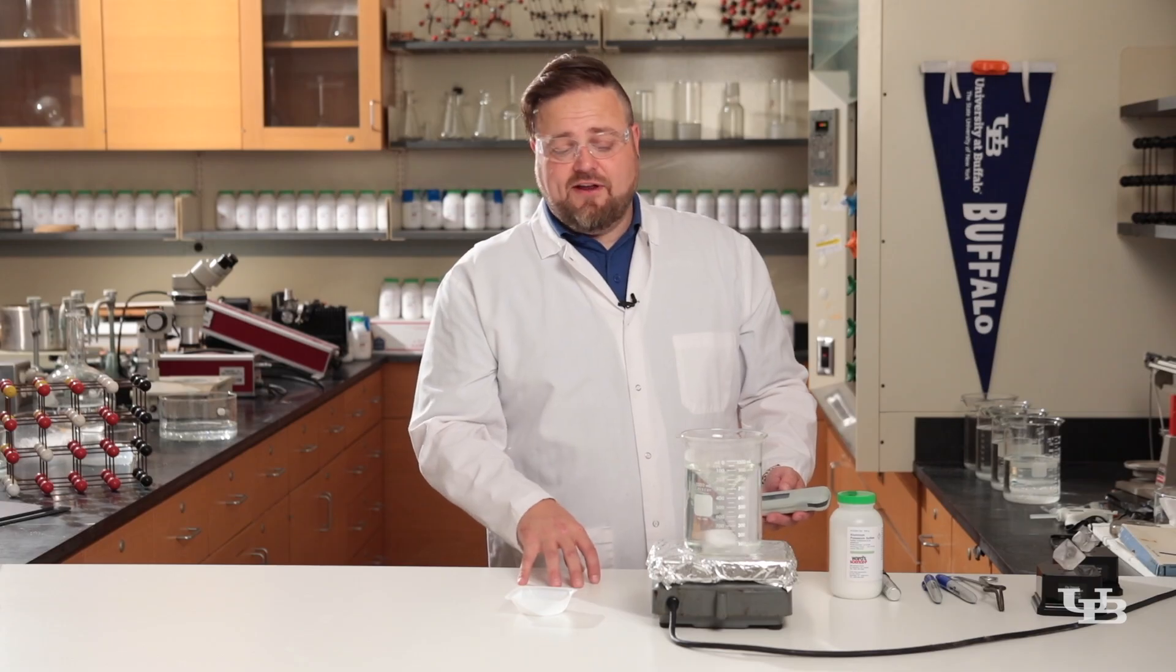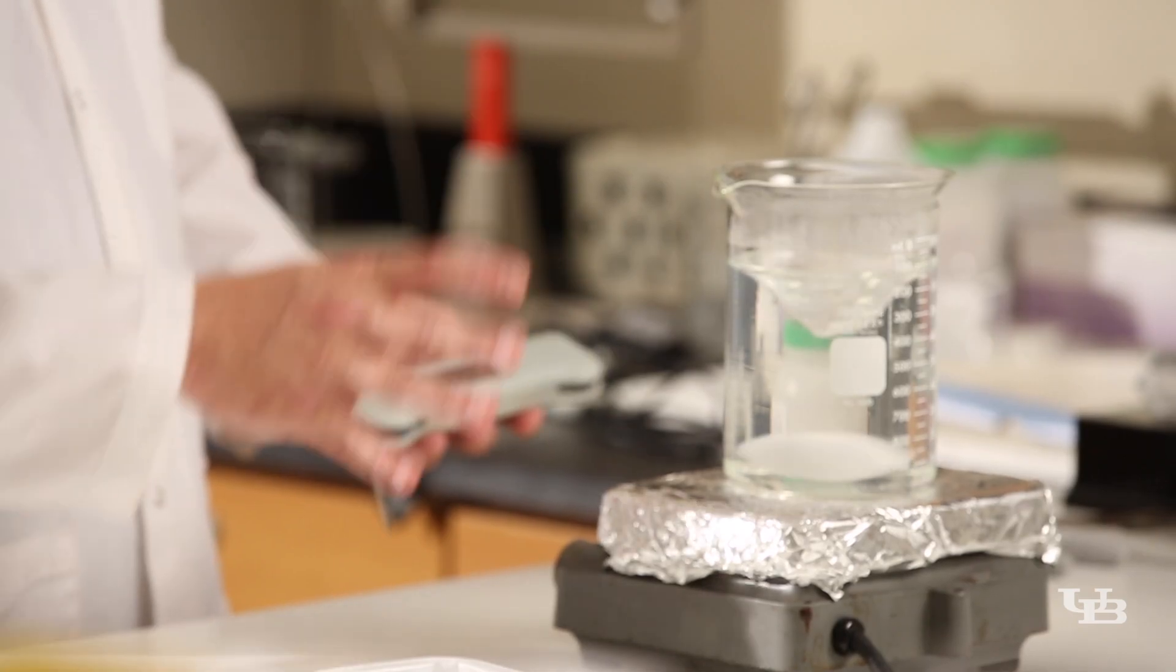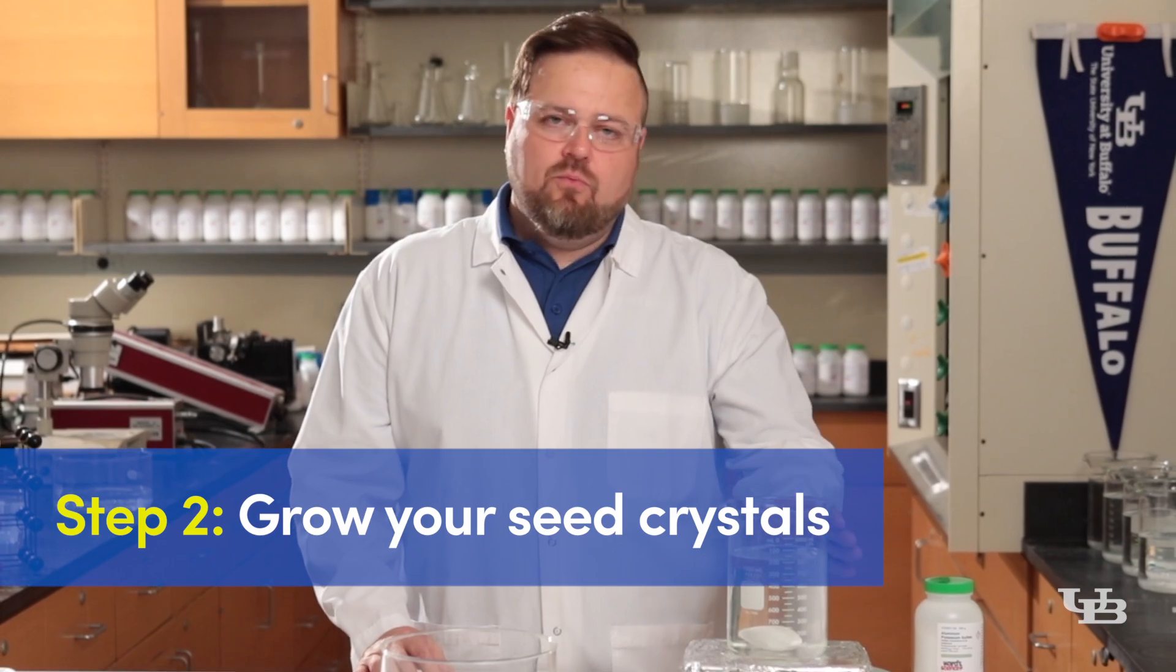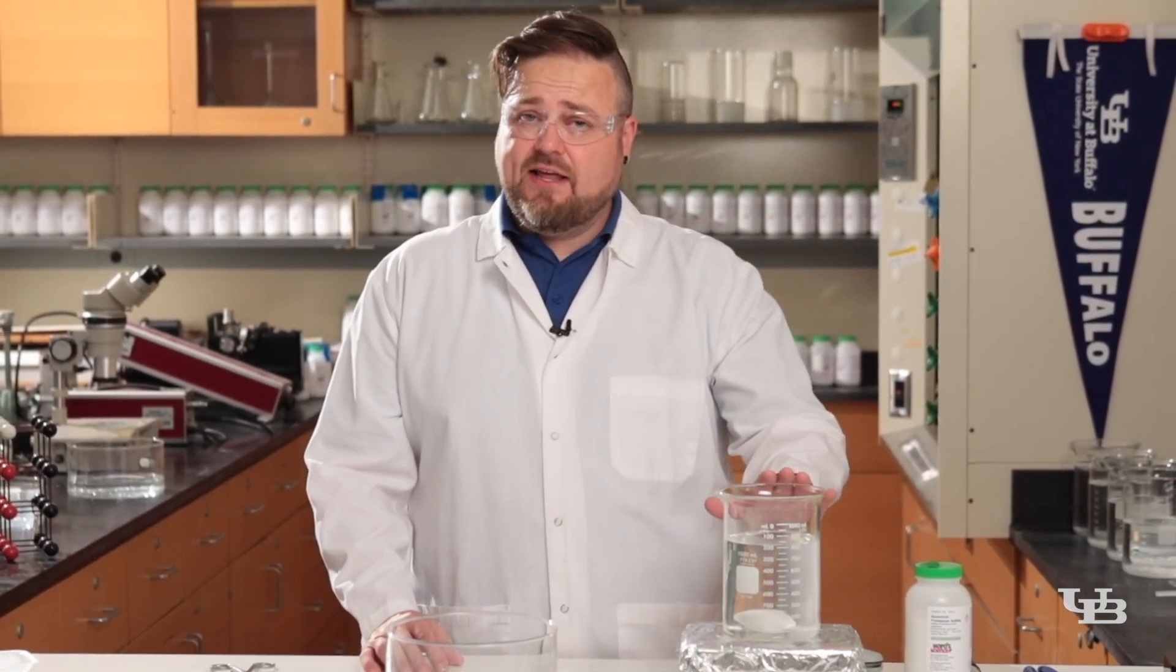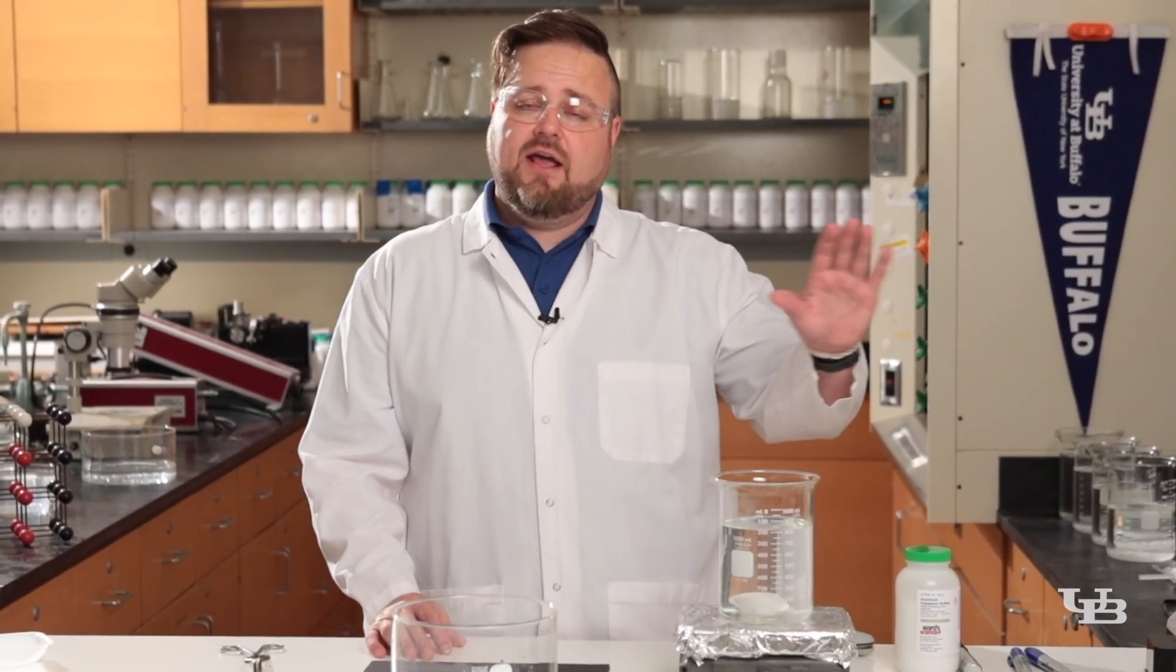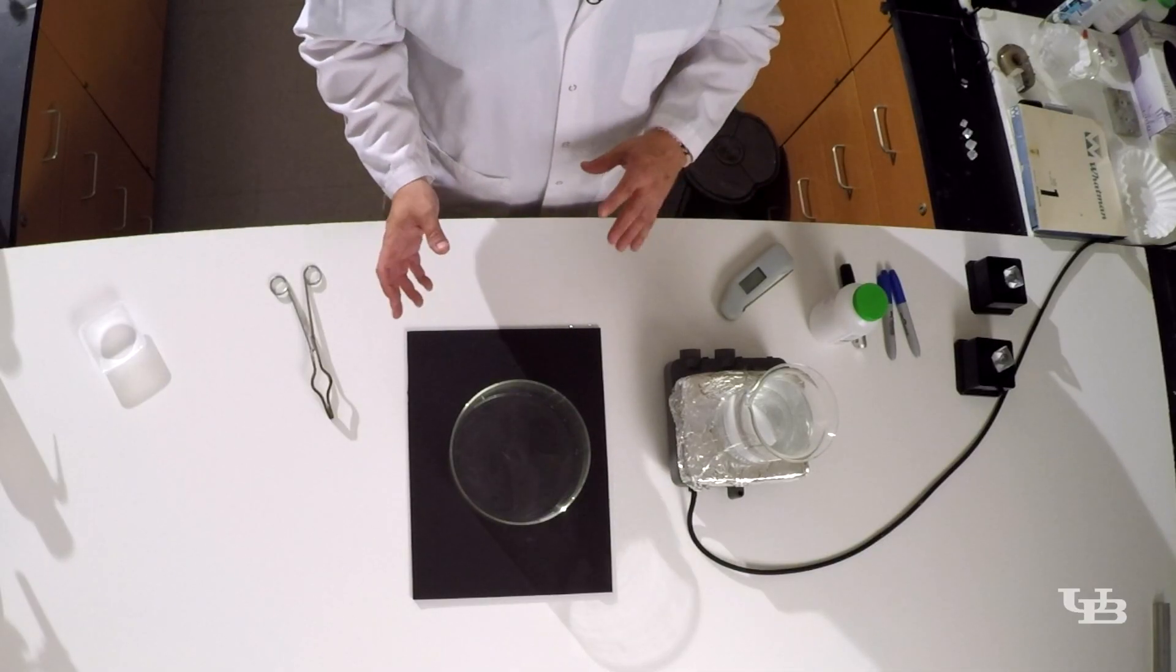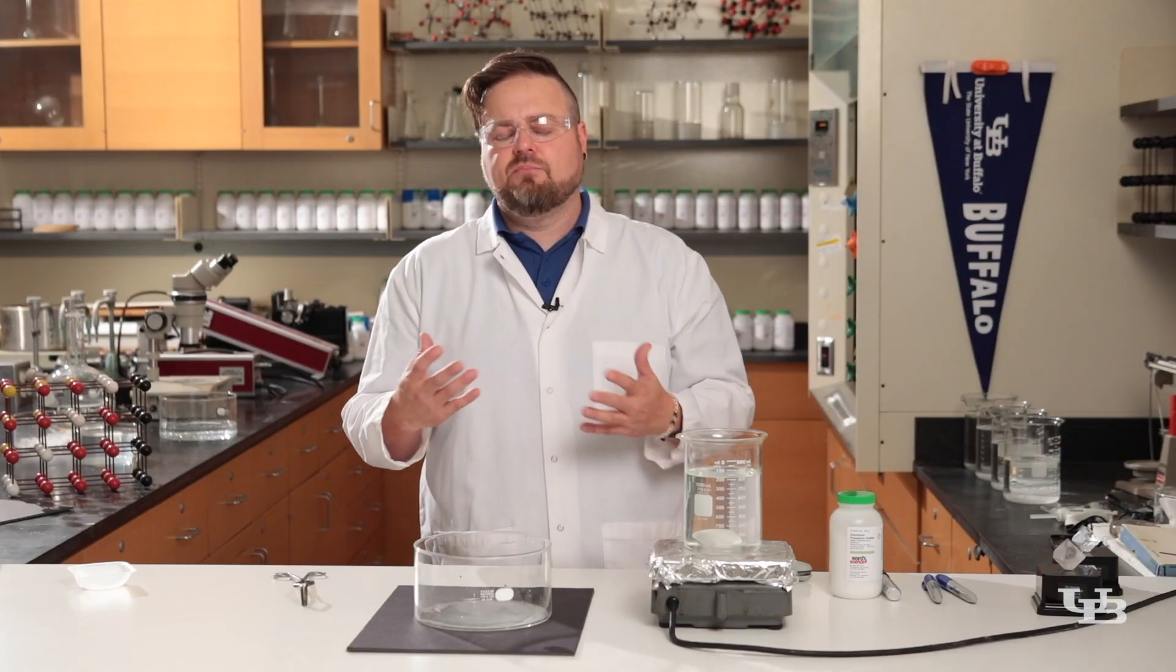Here we are a few minutes later. As you can see, all the alum has dissolved. We have a nice, clear solution. So you can go ahead and turn off the heat. So what happens next? Well, this is the part where we want to begin our crystal growth. Now you can let the crystals grow in this beaker. You can just set the beaker in a dark cabinet. Crystals like to grow best somewhere where they're not going to be disturbed. So a dark cabinet is perfect. No light, no vibrations, no big temperature changes.